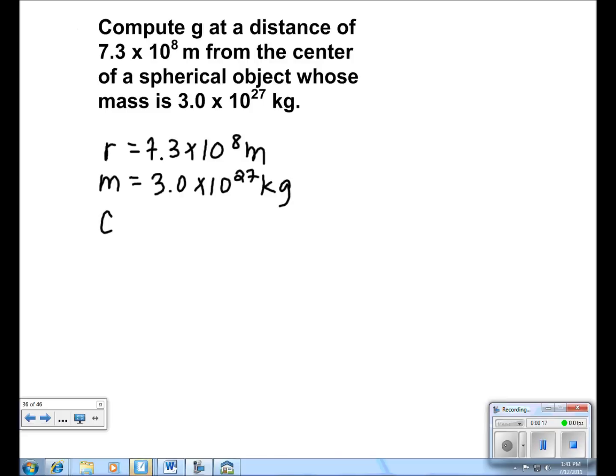We know that G is 6.67 times 10 to the negative 11 newton meters squared over kilograms squared. We use the formula g equals GM over r squared to find the surface gravity.